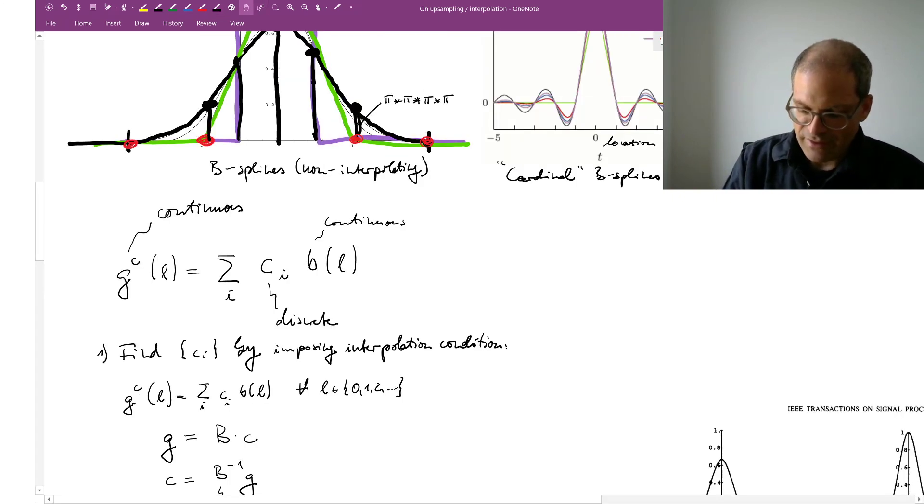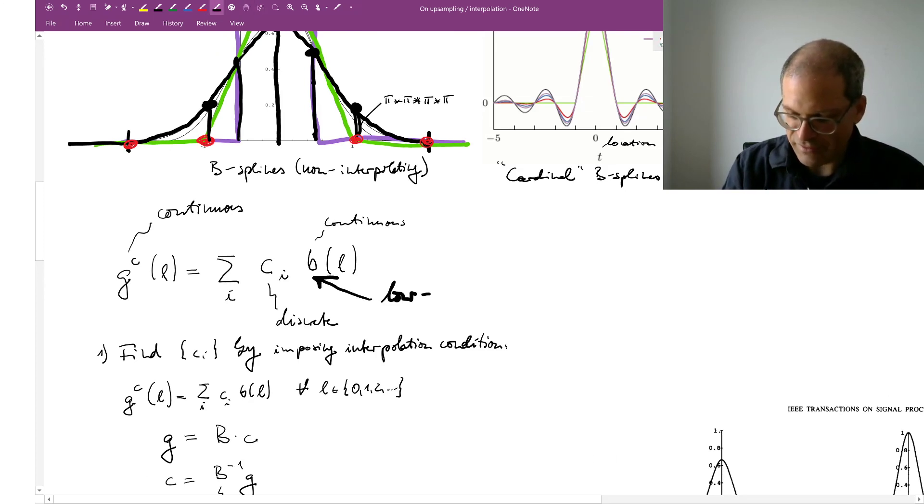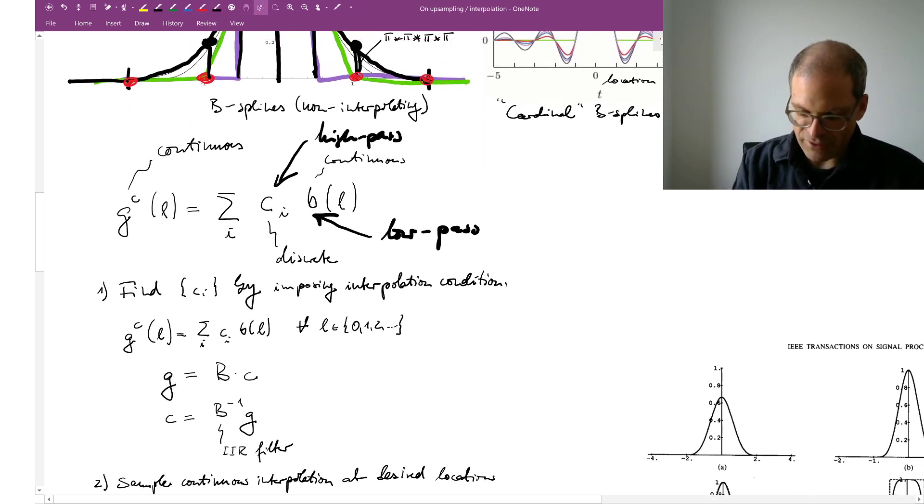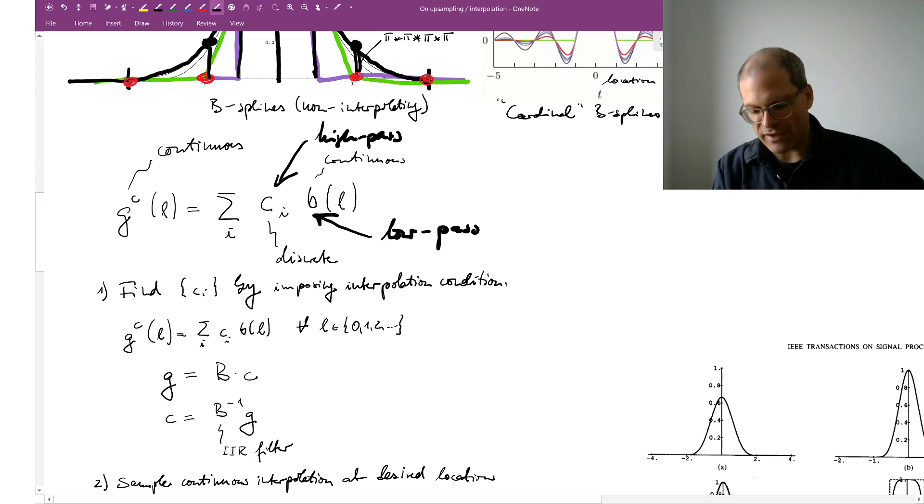Another way to look at it is that this thing here is a smoothing filter, so a low pass filter, and to compensate for its smoothing we need something which is high pass. And these high pass filters or coefficients here c, we obtain them from the original not interpolated signal by this operation. So if b is a low pass filter, then the inverse of b, b to the minus one, is a high pass filter.